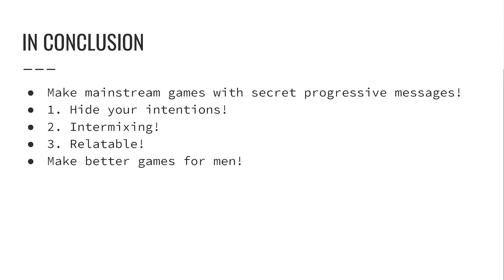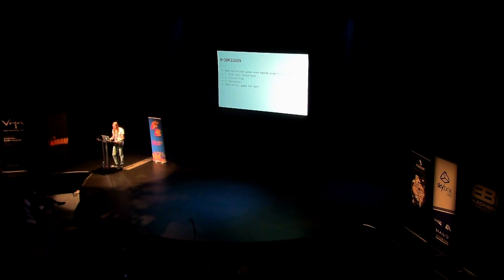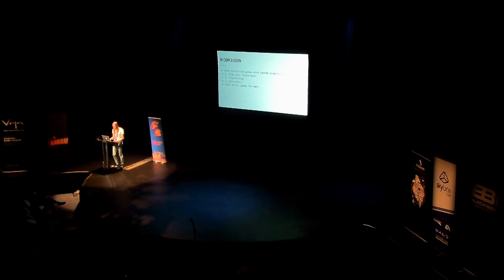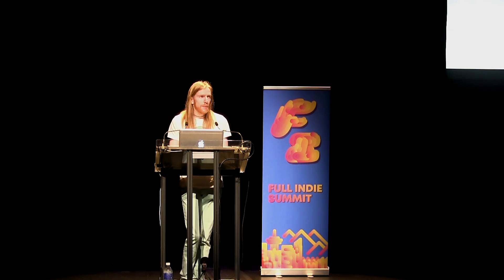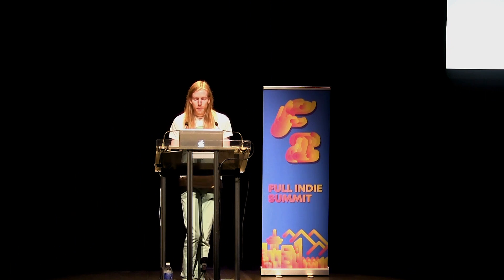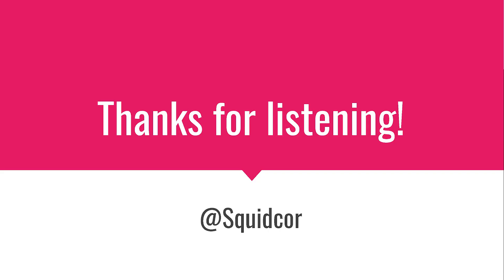In conclusion: you can make successful games that have mainstream appeal but also include a message that mainstream audiences might not like. You should do that, because then your message will hopefully have a larger and more effective reach. However, you still need to be very careful about how you present your message, especially if you think players are likely to be dismissive of it. So: obfuscate the intended message of the game, intermix on-message parts with off-message parts, and make your story as relatable as possible — use everyday human problems. And finally, let's try and make more and better games about men and masculinity. Thank you so much for listening.